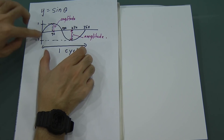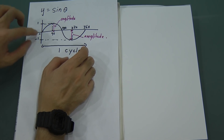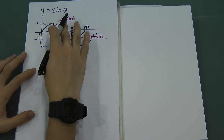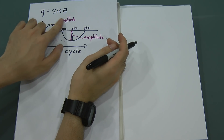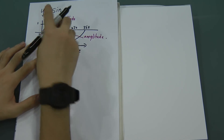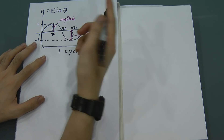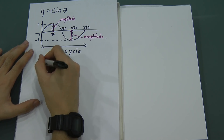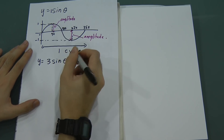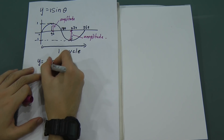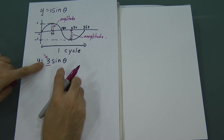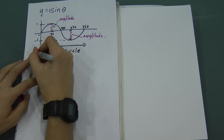The maximum value and minimum value for the sine graph — this is called amplitude. The amplitude here is actually 1. Normally we don't write the 1, we only write y equal to sine angle. So if I write y equal to 3 sine angle, this 3 means the amplitude is increased from 1 to 3. So this will be the amplitude.